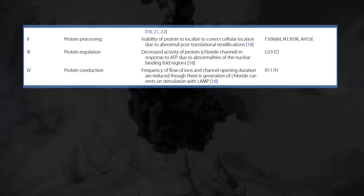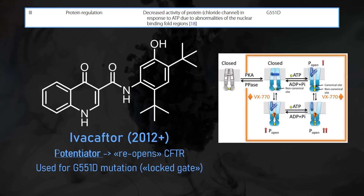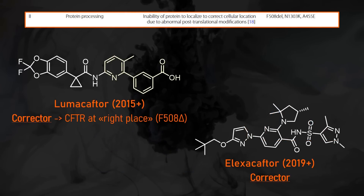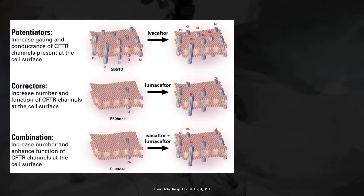The first revolutionary treatment in CF was Ivacaftor, a small molecule CFTR potentiator approved in 2012, which helps the ion channel stay open longer. Due to its mechanism, it was only helpful for the few patients with less active ion channels — for the vast majority with the phenylalanine deletion, getting more activity doesn't help if the channels are not properly localized to begin with. Fortunately, Vertex later developed correctors: Lumacaftor, which ensures more proteins are brought to the cell membrane, and later Elexacaftor, which has a different binding site. Lumacaftor was also outshined by next-generation corrector Tezacaftor.